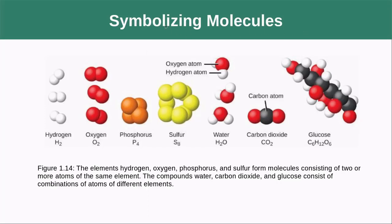We have many ways of symbolizing molecules. One common method is the ball-and-stick model, where each atom is represented by a ball of a different shape and size, and they overlap slightly to indicate chemical bonding. Examples shown include hydrogen, oxygen, phosphorus (P₄ — four phosphorus atoms), sulfur as a polymer (S₈), water (one oxygen bound to two hydrogens), CO₂ (one carbon bound to two oxygens), and glucose (C₆H₁₂O₆) — a simple sugar that illustrates how really elaborate molecular structures can get.